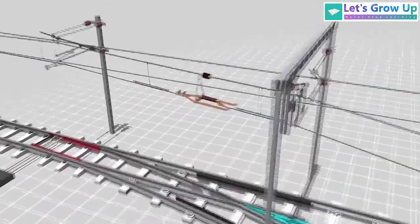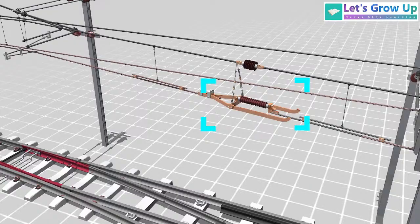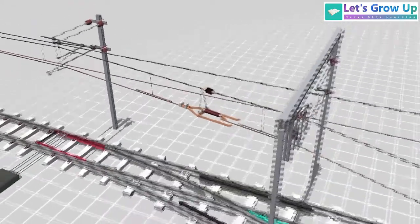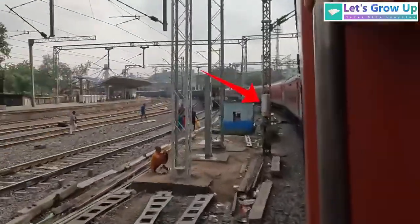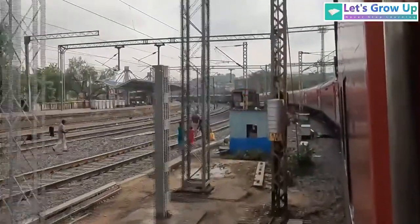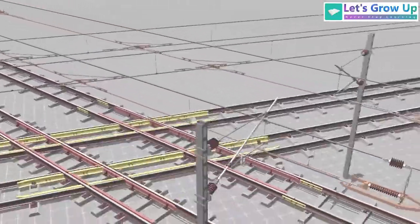In railway electrification systems, section insulators serve to provide electrical isolation between different segments of the overhead electrification OHE system. These insulators are commonly positioned at strategic locations such as crossovers, diamond crossings, turnouts, loops, and sidings.